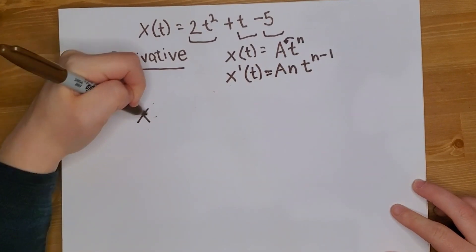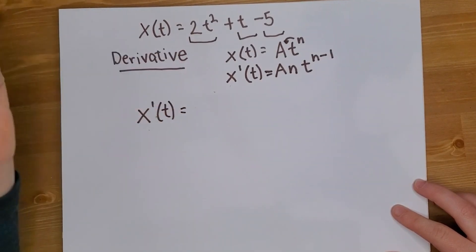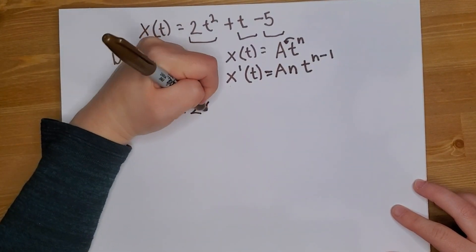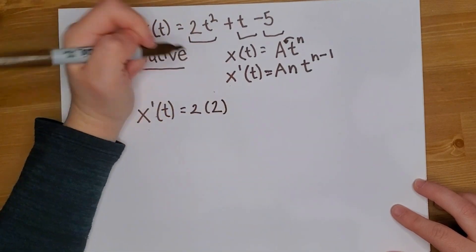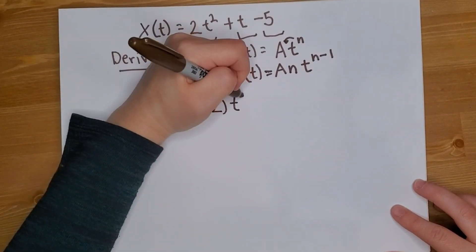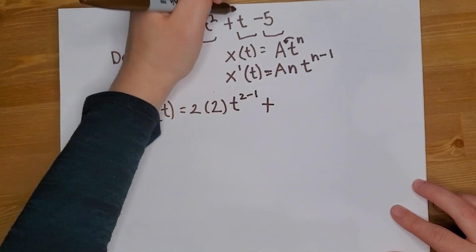For my first term, x'(t), which is going to be my velocity, we have 2, my constant, times, well that's my power 2, so I multiply on this side, t and then I have 2 minus 1, which is my power on this top.